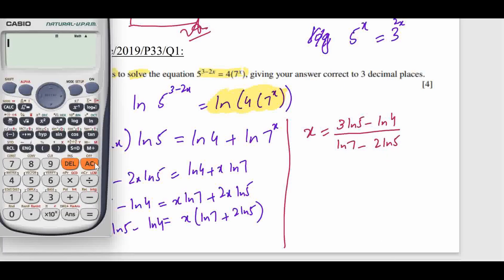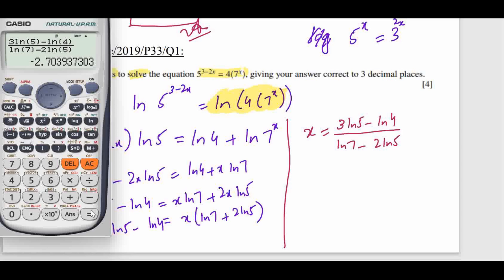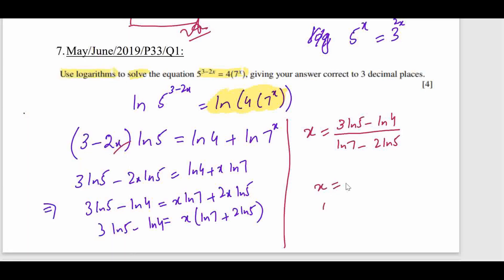Using the calculator with this expression — (3·ln 5 − ln 4) divided by (ln 7 + 2·ln 5) — the final answer is x = −2.703. I hope the concept is clear, and if you have any questions you can ask in the comment section.